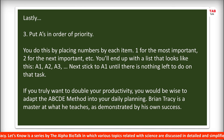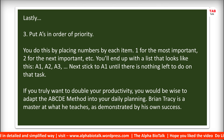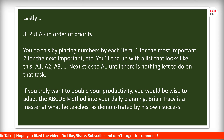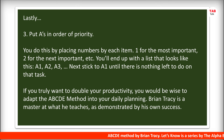Lastly, Step 3: Put your A items in order of priority. You do this by placing numbers by each item — 1 for the most important, 2 for the next most important, and so on. You'll end up with a list that looks like A1, A2, A3. Then, stick to A1 until there is nothing left to do on that task.